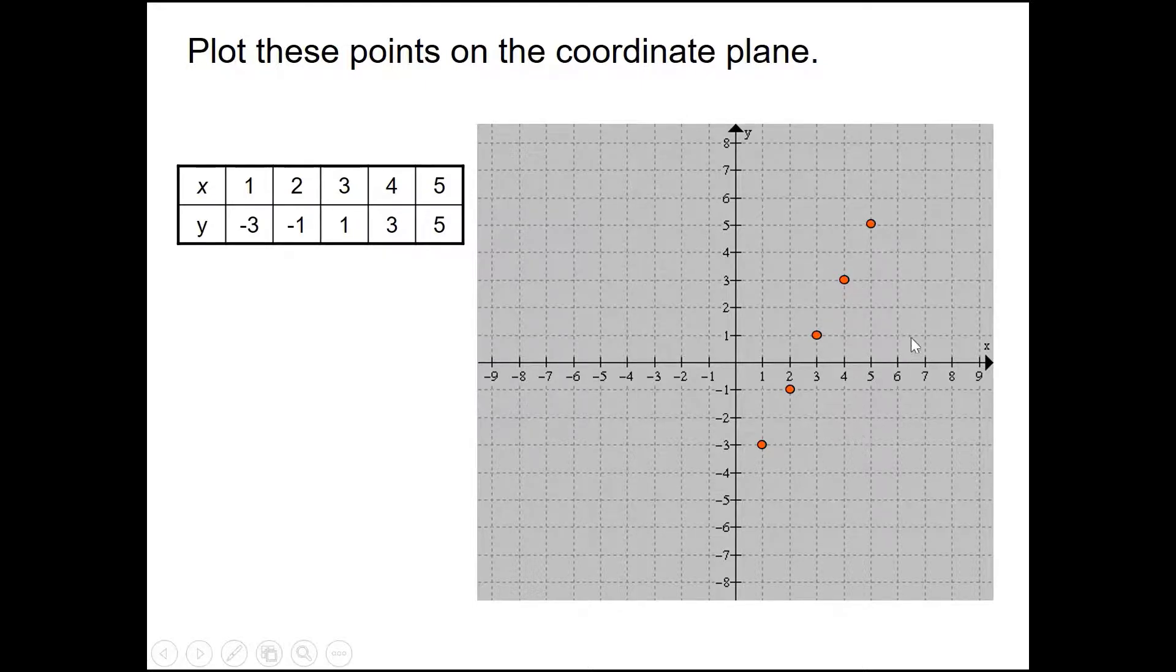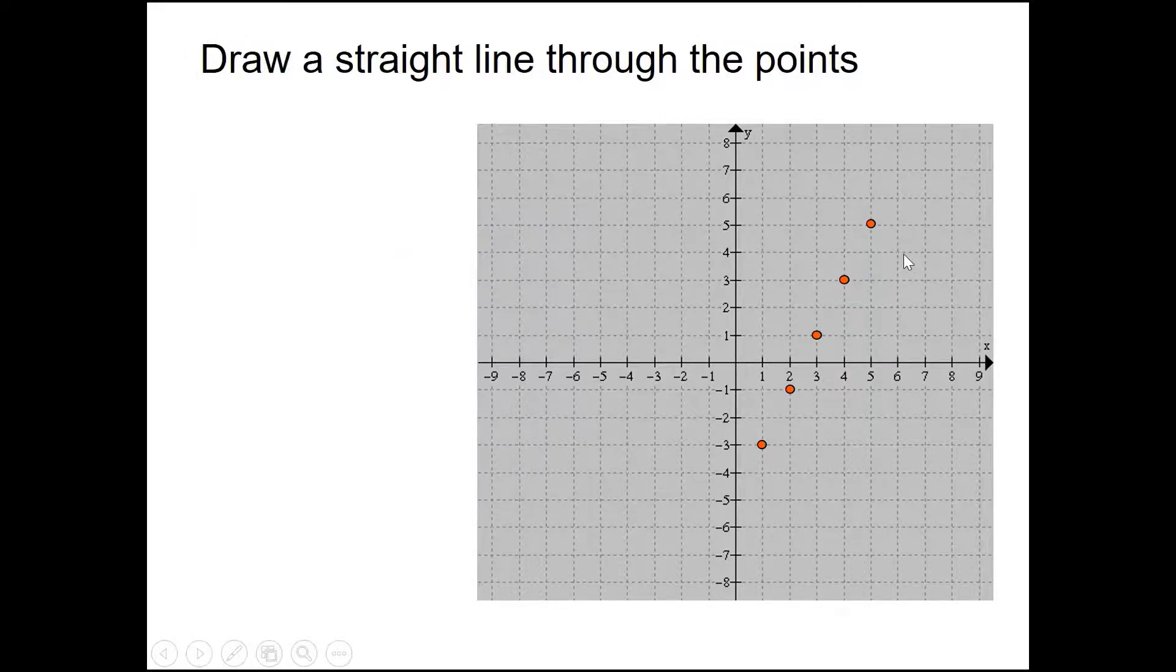What you then need to do is just grab a ruler and join these points and extend those lines. So there you have it. So it's pretty straightforward. So what you need to do is first things first try and use the equation to fill in the table of values. Get the y values and then you plot those and use a ruler to join them creating a straight line. Hope that helps.